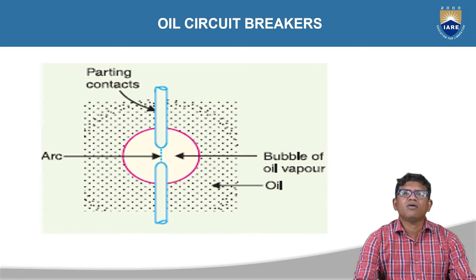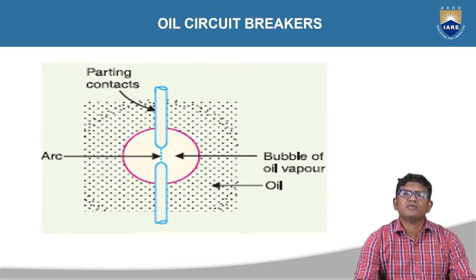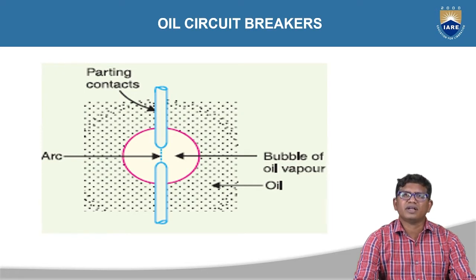We have to extinguish the arc within a short time. If we fail to extinguish the arc, the heavy current flows from the fixed contact to the moving contact and further to the load terminals, causing damage to the load. That is why we must extinguish the arc within a short time.